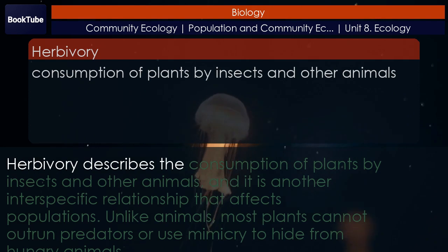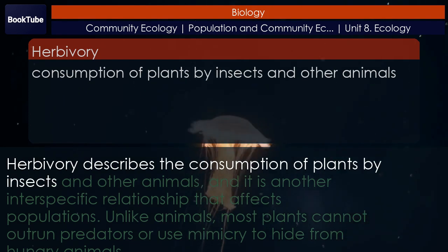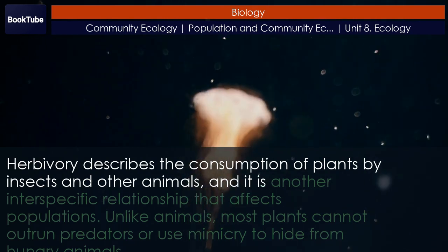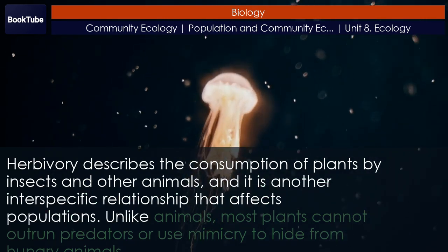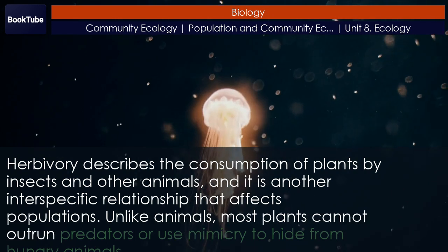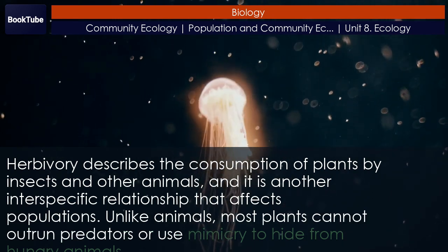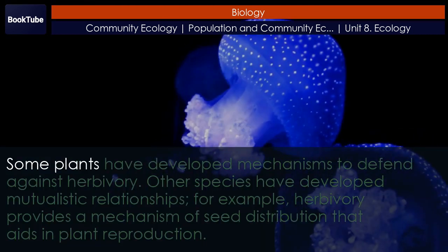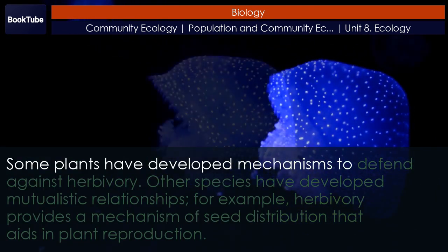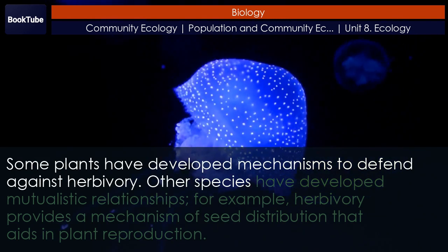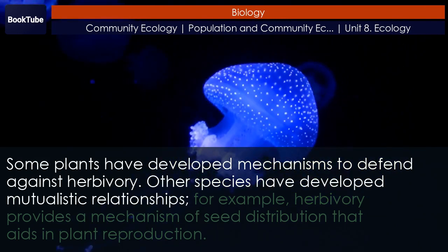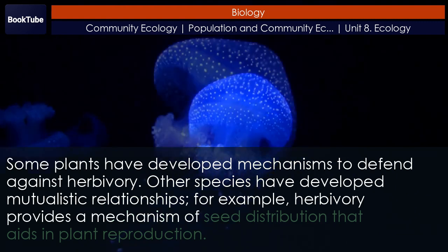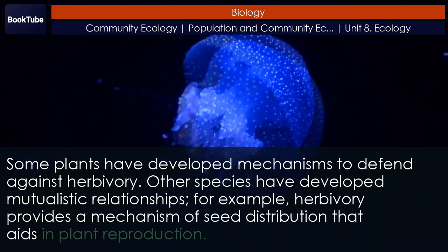Herbivory describes the consumption of plants by insects and other animals, and it is another interspecific relationship that affects populations. Unlike animals, most plants cannot outrun predators or use mimicry to hide from hungry animals. Some plants have developed mechanisms to defend against herbivory, while other species have developed mutualistic relationships. For example, herbivory provides a mechanism of seed distribution that aids in plant reproduction.